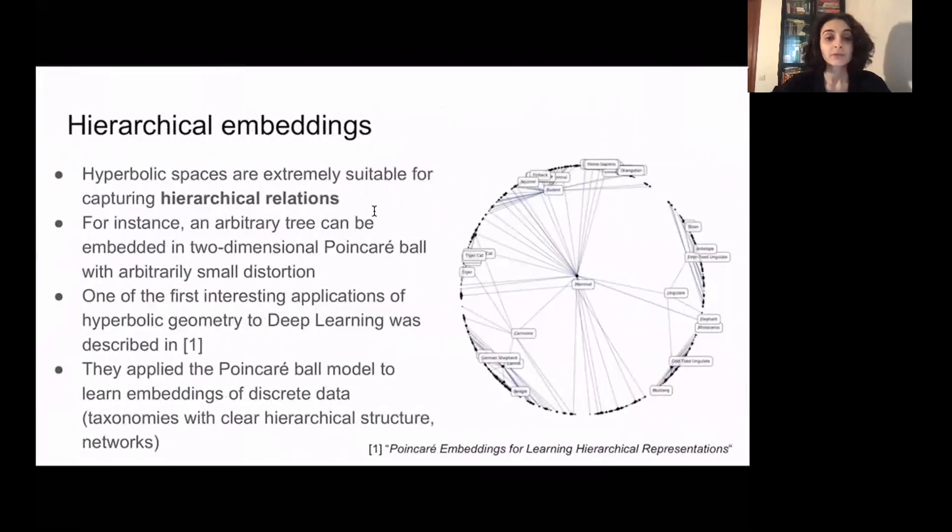As we've mentioned before, hyperbolic spaces are very suitable for embeddings of data with hidden hierarchy. It was recently proved that one can embed a tree to Poincaré Ball with a small error. Recent work proposed to use Poincaré Ball model for embeddings of discrete data with clear hierarchy, for example taxonomies.